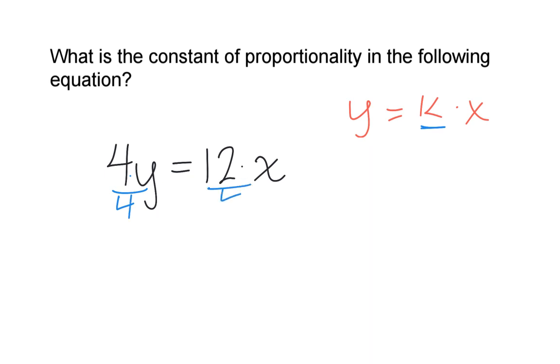When we do that, the multiply by 4 and divide by 4 cancel. We're left with y equals, and then 12 divided by 4, which gives 3 times x.